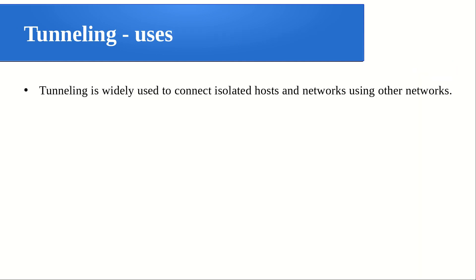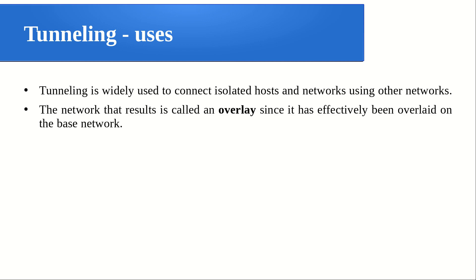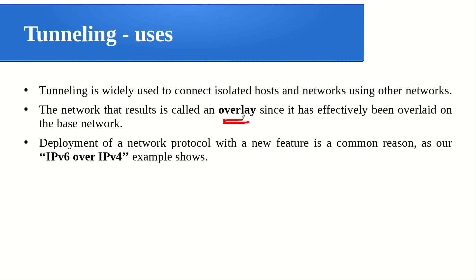Tunneling is widely used to connect isolated hosts and networks using other networks. In our case, those IPv6 branches in London and Paris are something experimental and somewhat isolated, while the wider network depends on IPv4. When experimenting with something like IPv6 and wanting connectivity between them, we can depend on IPv4 tunneling. The resultant network is called an overlay network, since it has effectively been overlaid on the base IPv4 network.